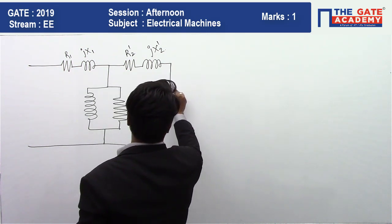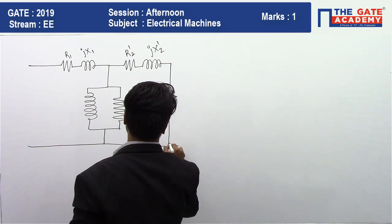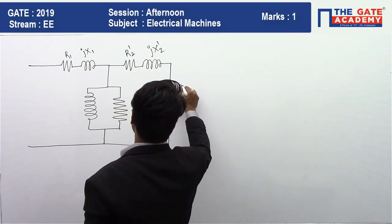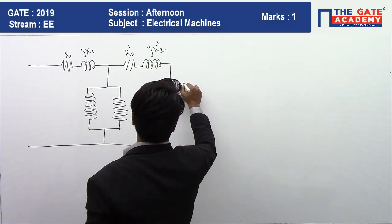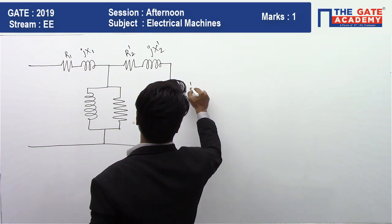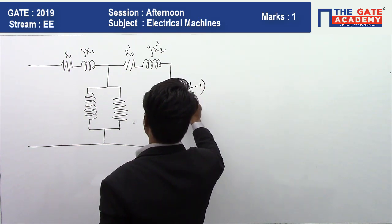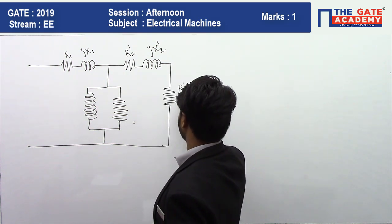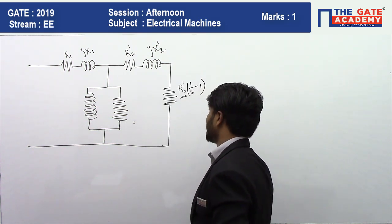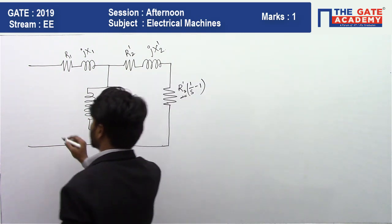This is the resistance which represents the mechanical power developed, given by R2 dash multiplied by (1/S − 1). The power developed component is represented by this term: R2 dash into (1/S − 1).